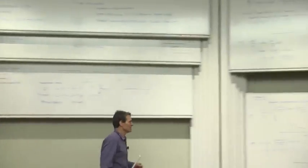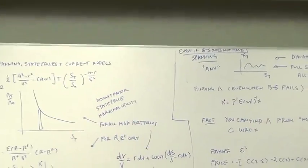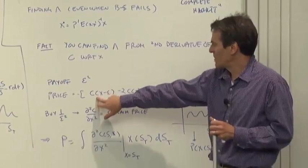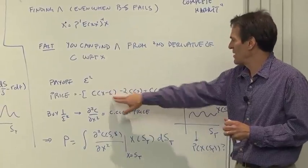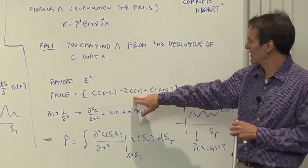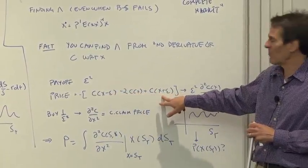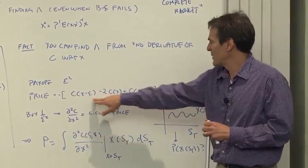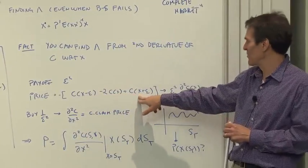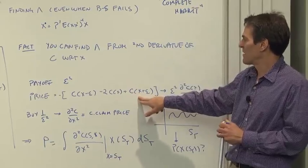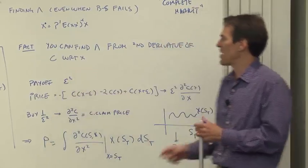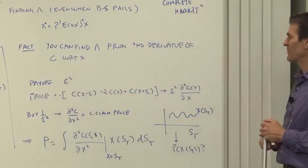You can see what we're doing. As epsilon goes to zero, we're creating a contingent claim. The equation version: the payoff of that contingent claim is epsilon squared. The price is call option price of the higher one and the lower one minus the two you sold at the middle plus the one you bought at the right. But wait, c of x minus epsilon, that is the second derivative times epsilon squared. Therefore, if you buy one over epsilon squared of these itty bitty little butterflies, the price of that thing is the second derivative of call with respect to price.